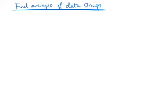We're going to talk about finding the averages of data strings. An example of a data string would be something like 1, 5, 11, 13, 21, 41, 52. That's our data string.